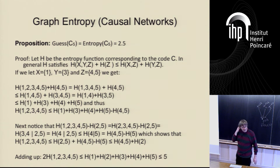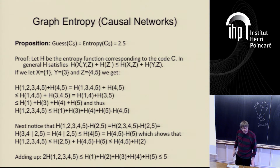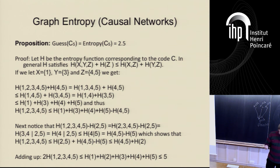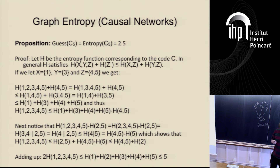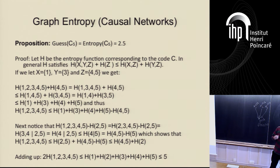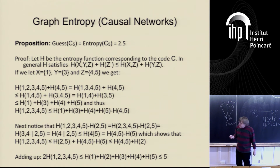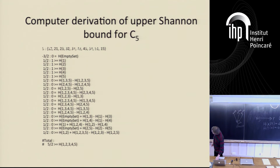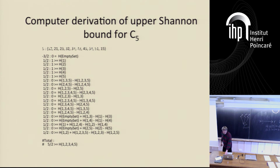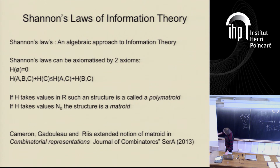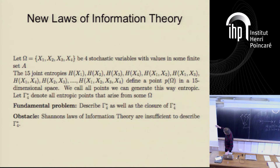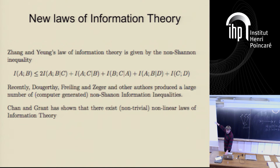An audience member asked whether this relates to chromatic entropy or graph entropy in the sense of Körner. The answer is: I got convinced there is no relationship simply by calculating the values for different graphs and seeing they differ. Anyway, it turns out that Shannon's information inequality is not the only one — there are hundreds of other information inequalities known to be true but not derivable from Shannon's inequalities.